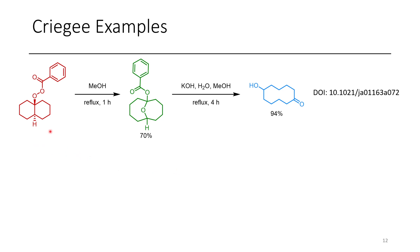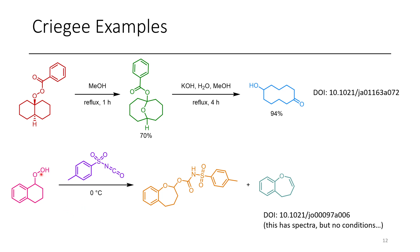Examples include one of the first reported cases where a transdecaline system is acylated using benzoyl chloride. In the presence of methanol at reflux, it rearranges to an ester-ketal type product, which is hydrolyzed to give a hydroxy ketone — with a ring expansion. Another example involves treatment of a hydroperoxide with tosyl isocyanate, which spontaneously rearranges to give an acetyl-type product along with some elimination, favoring the acetal over the unsaturated product in a 6:1 ratio.